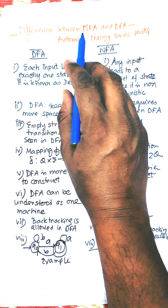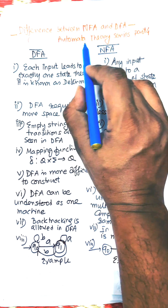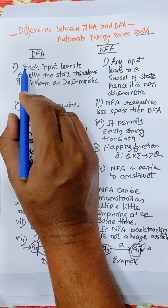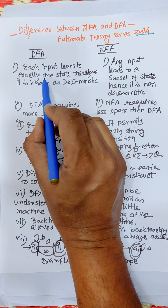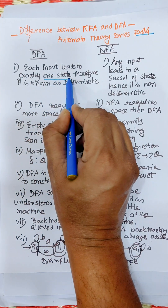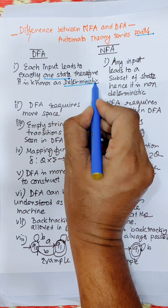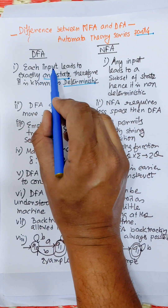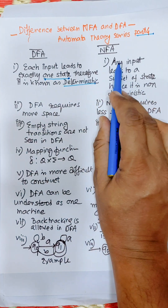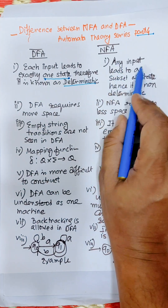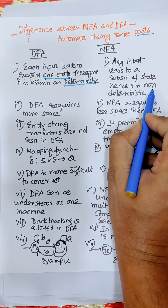Hi everybody. In this video I am going to discuss the difference between DFA and NFA. This is the Automata Theory series, part 4. In DFA, each input leads to exactly one state, therefore it is known as deterministic. In NFA, any input leads to a subset of states, hence it is non-deterministic.